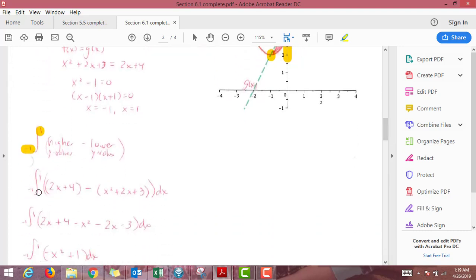So when we set up our integral, we already said we're going from negative 1 to 1. And we need to do the higher function minus the lower function. So it is, for this problem, going to be the 2x plus 4 minus the quadratic.